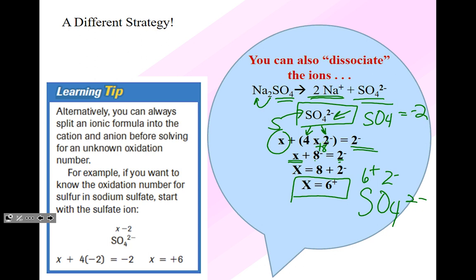In strategy two, I'm dissociating the compound, ignoring the sodium part since it's not what's being asked for, and taking just the sulfate ion to find sulfur. Just make sure you know that for the sulfate ion it's equal to negative two.